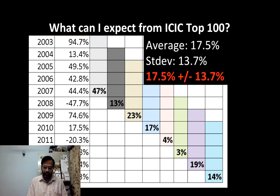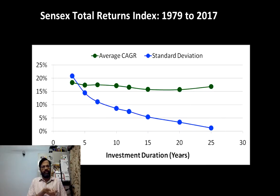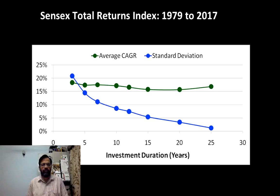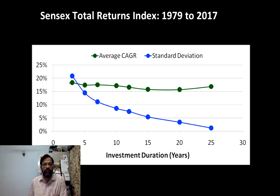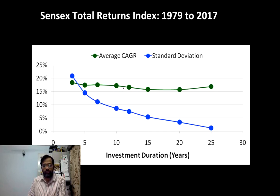Now let me extend this study. Let's take the Sensex Total Returns Index from 1979 to 2017. Suppose I take that and look at every possible three-year, five-year, ten-year, fifteen-year, twenty-year, and twenty-five-year period between 1979 and 2017. I calculate the average annualized return — the CAGR, the compounded annualized growth rate — for those three-year, five-year, seven-year, ten-year, twelve-year, fifteen-year, twenty-year, and twenty-five-year periods. That's the green line.